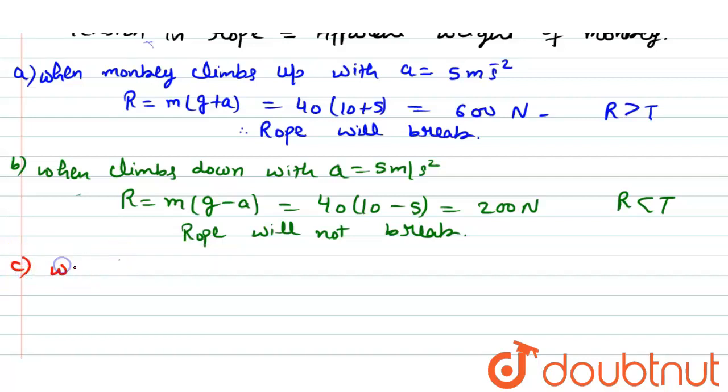Then third part says, when monkey falls down with g, then A equal to G, and R will be M into G minus G equal to 0.